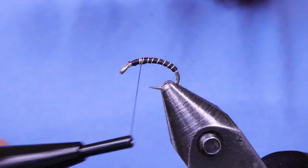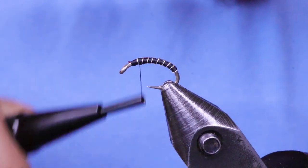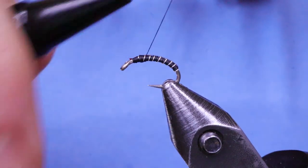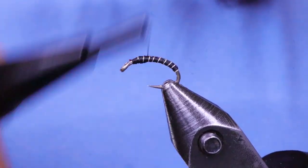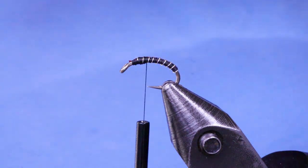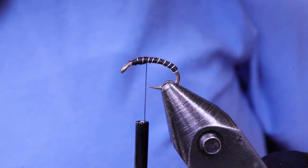Next I'm going to bring my thread back over the wire here, just build up a little bit of a thread base. And that's where I'm going to tie in my micro glint.